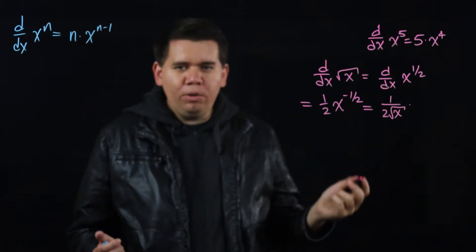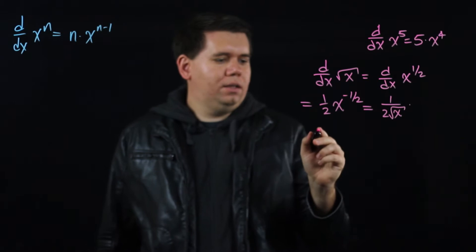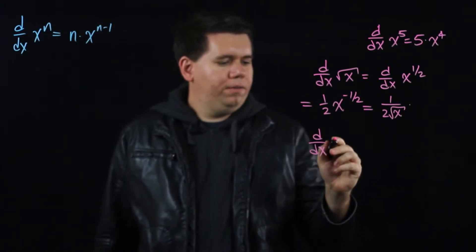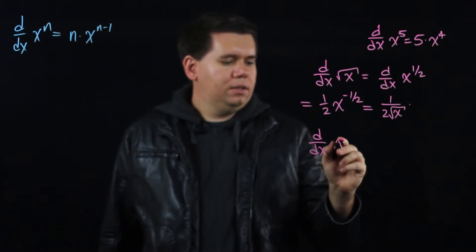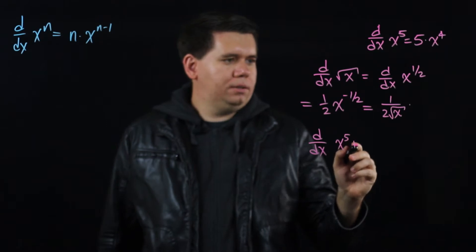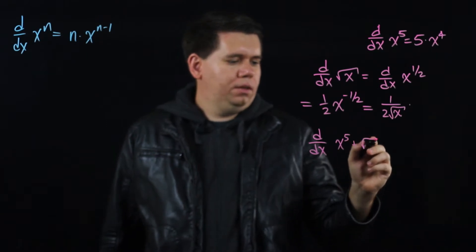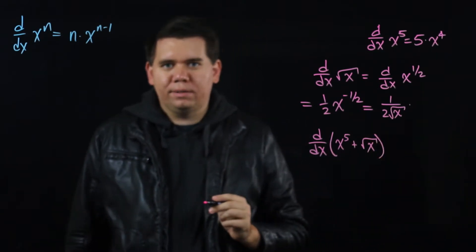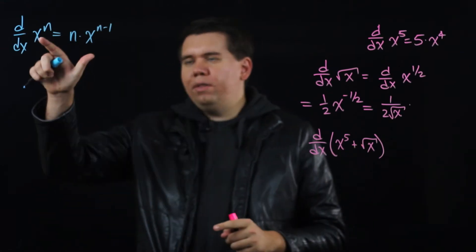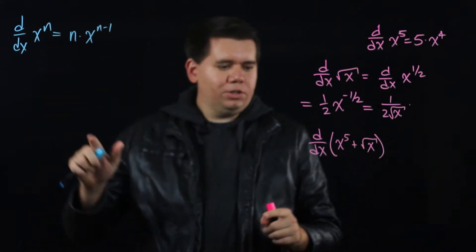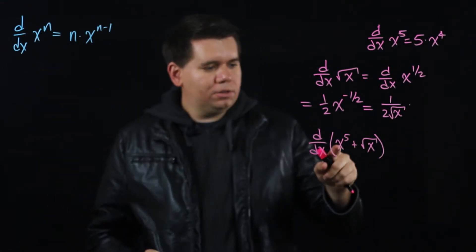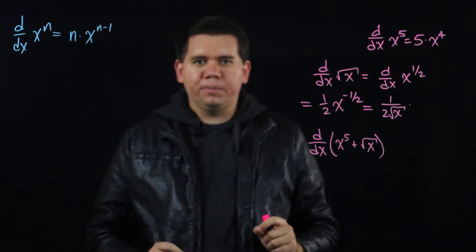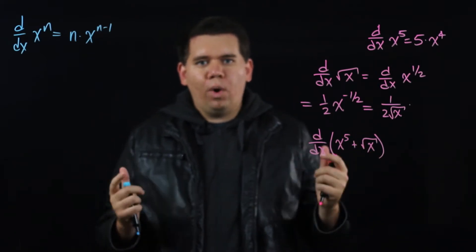But what if we wanted to calculate something like the derivative of x to the fifth plus the square root of x? Now it's no longer of this form — it's not just x to some power, but x to some power plus x to another power. What do we do?